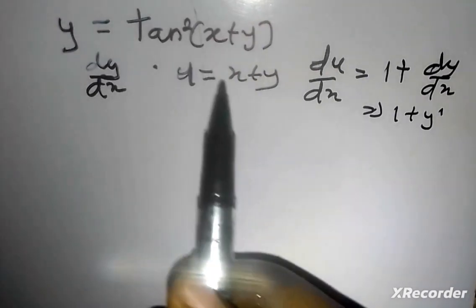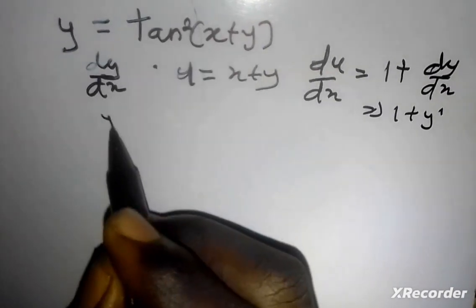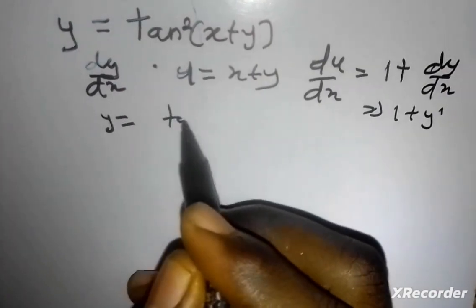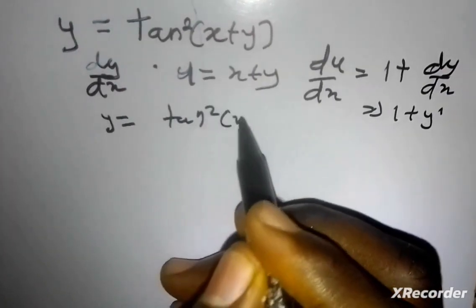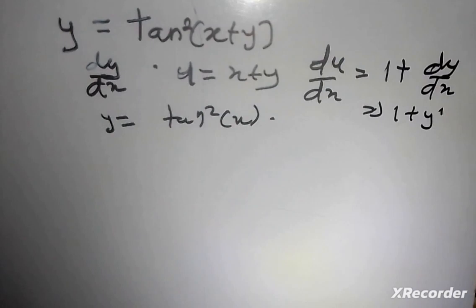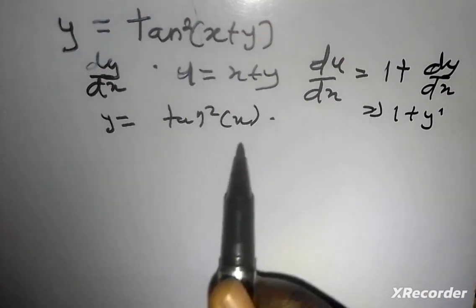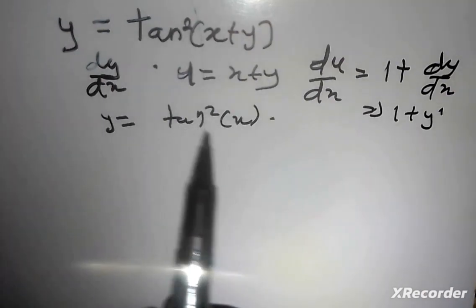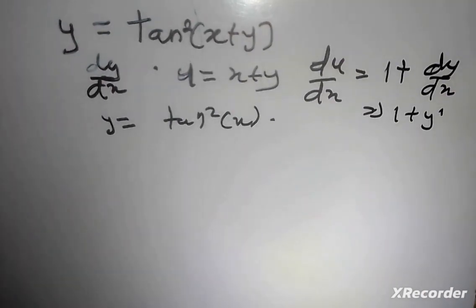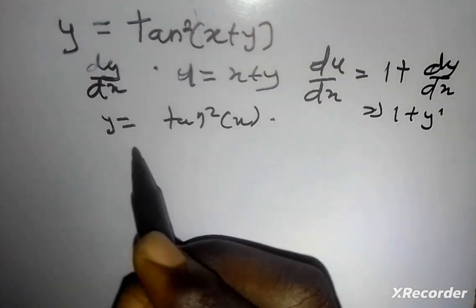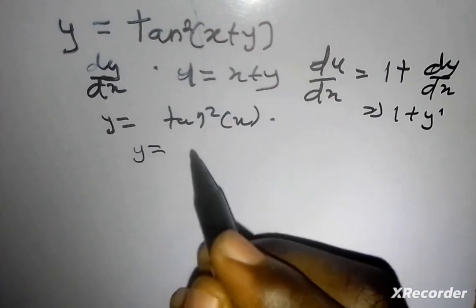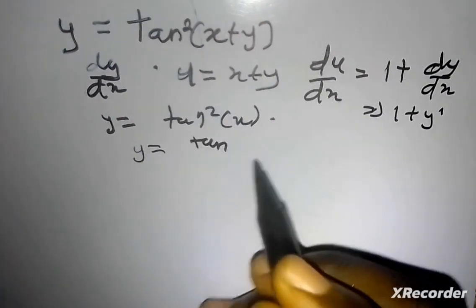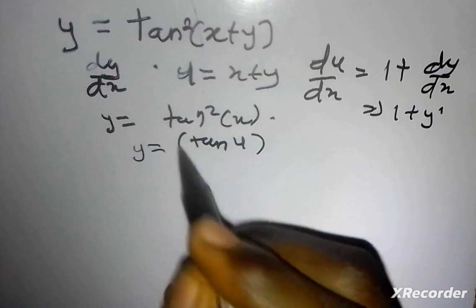Since I made x plus y equal to u, I'll make my substitution. So my y is now equal to tan squared of u. This is also another composite function to tackle — y is actually equal to (tan u) all squared.